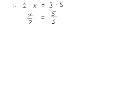If we have x divided by 2 on the left hand side, we need to multiply both sides by 2. So we do 2 times x over 2 must equal 2 times 5 over 3. This will mean that we undo the divide by 2 and we are left with x equaling 10 over 3.